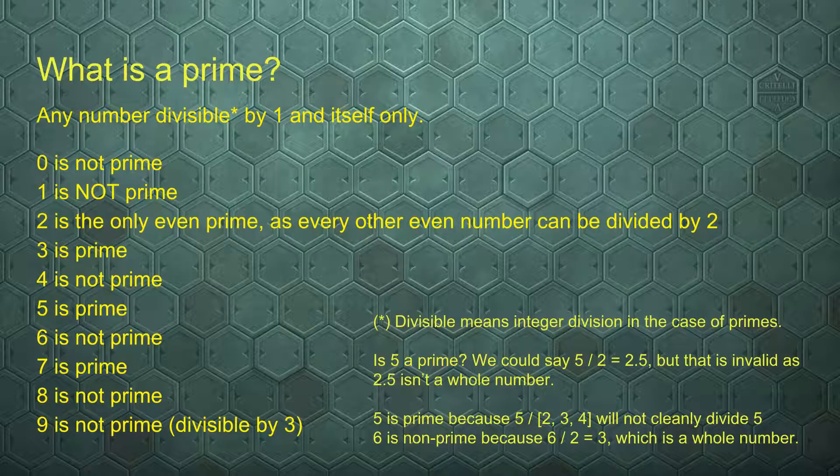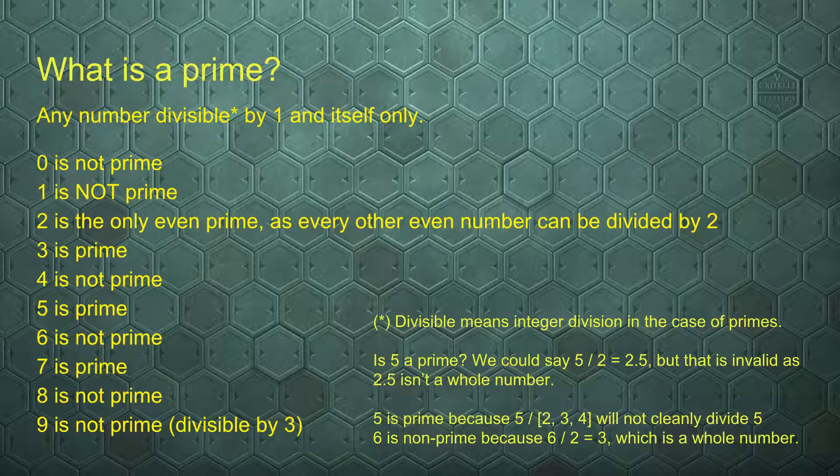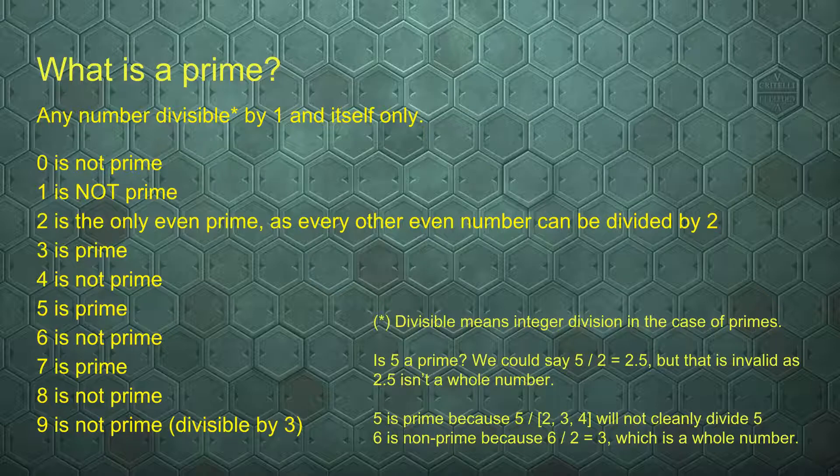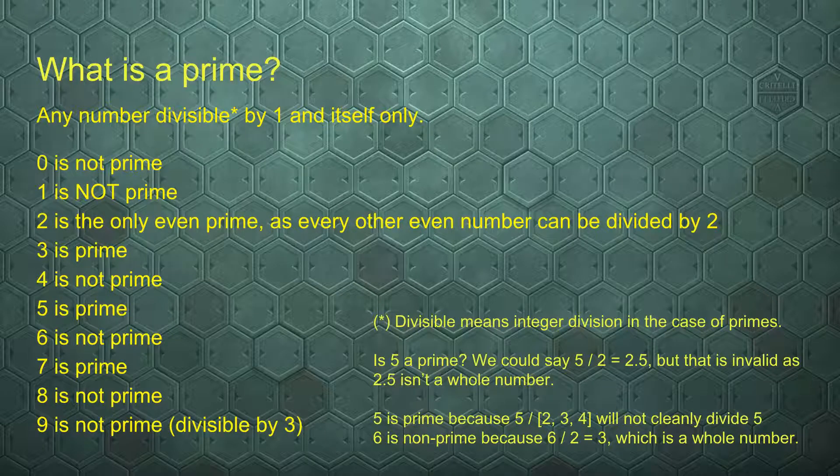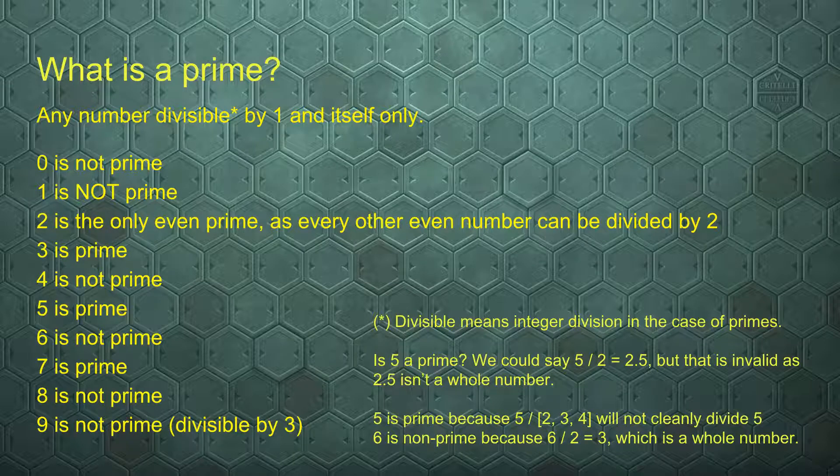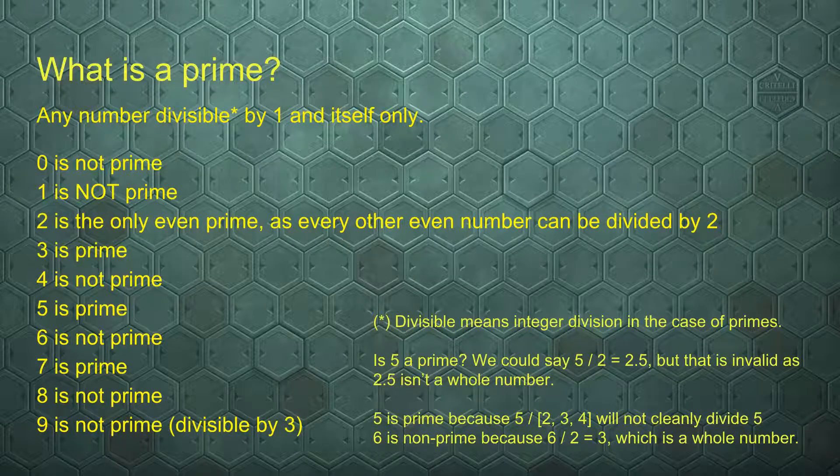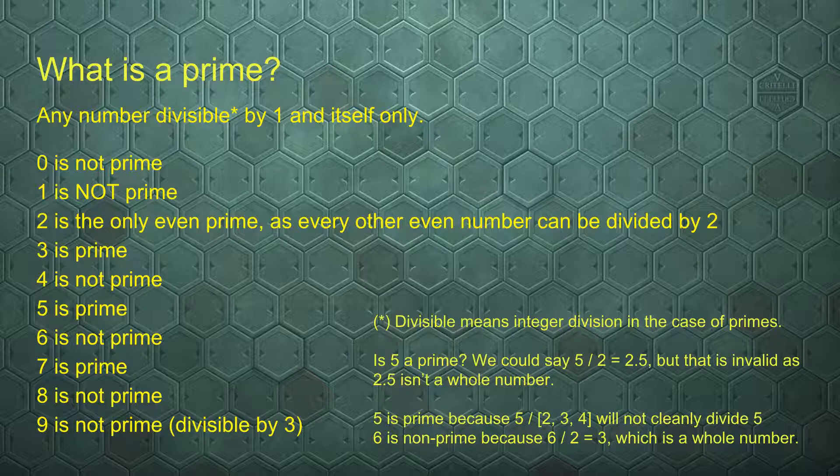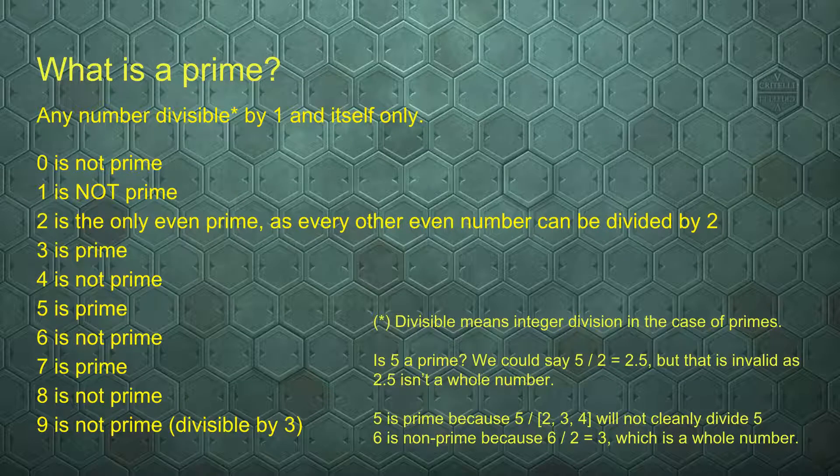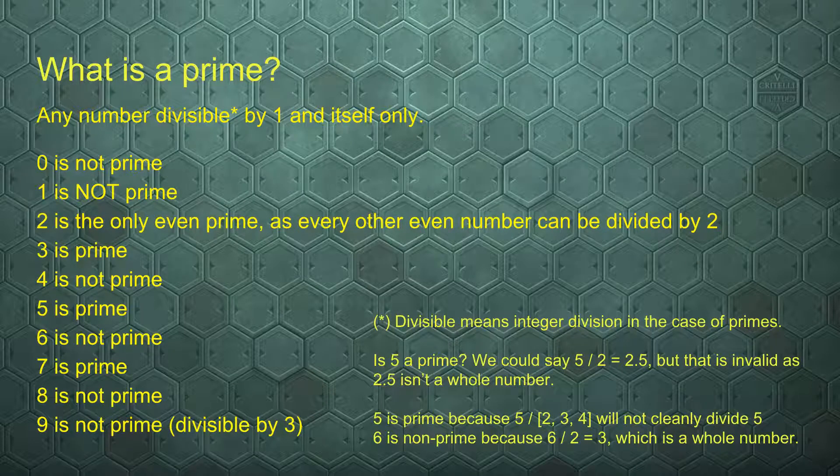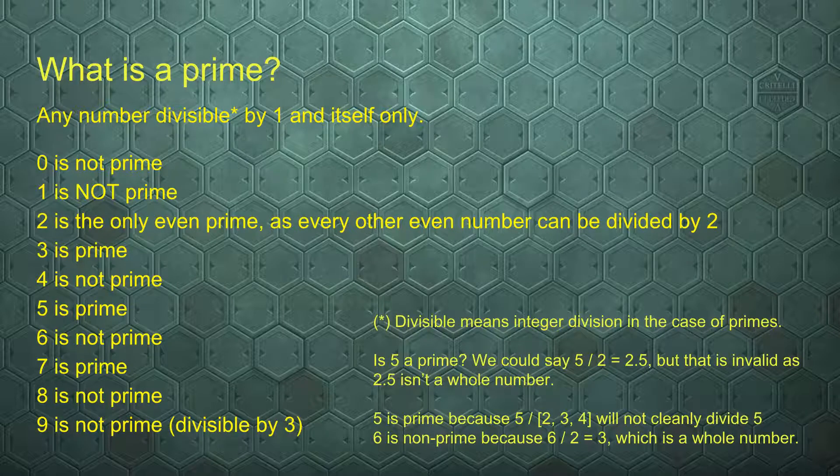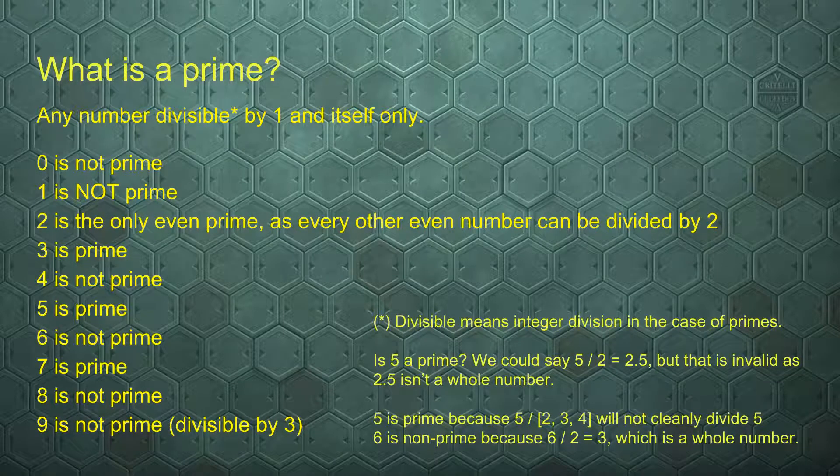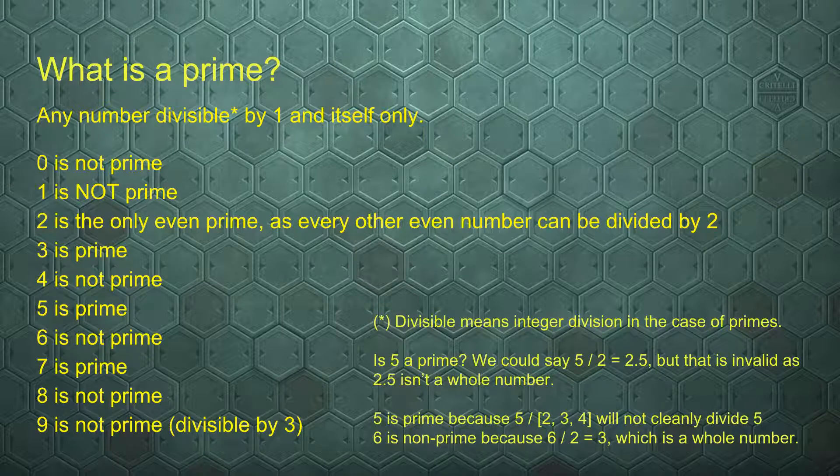With divisible we mean integer division. If there is a result, it has to be an integer and not a decimal. We are looking at whole numbers. 5 is prime because we cannot find any number dividing 5 and leaving a whole number. 6 is not prime because 6 can be divided by 2 leaving a whole number 3.